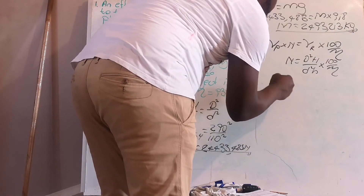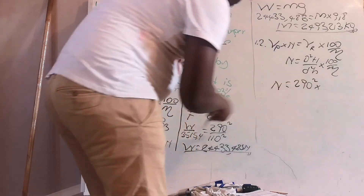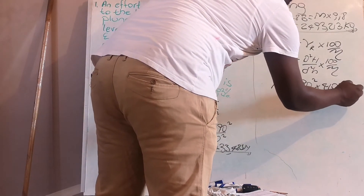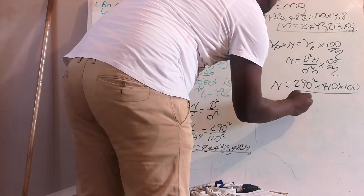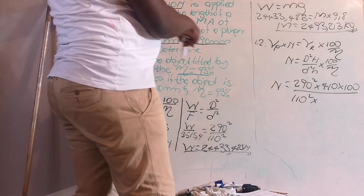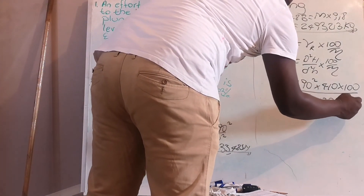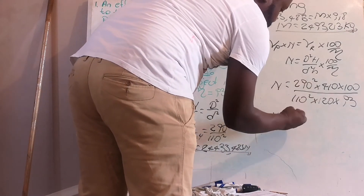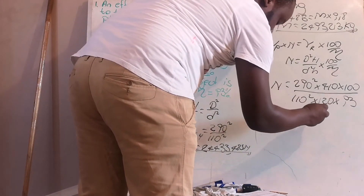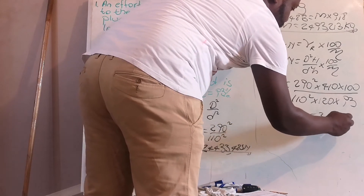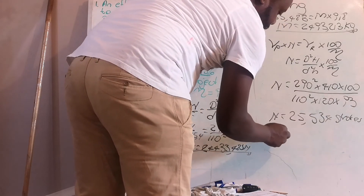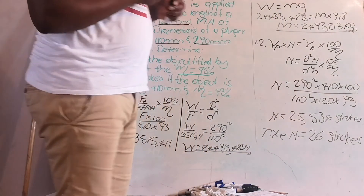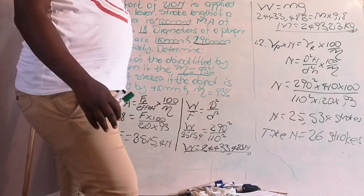Your number of pumping strokes equals 290 squared times 14 (the distance the ram moves) times 100, divided by 110 squared times 120 (stroke of the plunger) times 93. Calculating: you get approximately 25.534 strokes. Since you cannot have a fraction of a stroke, round up to 26 strokes.